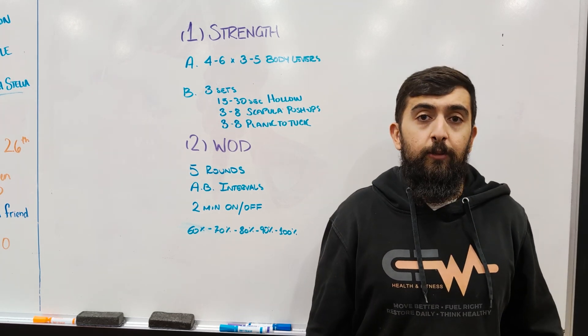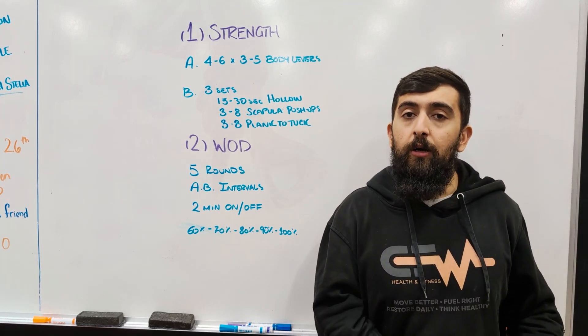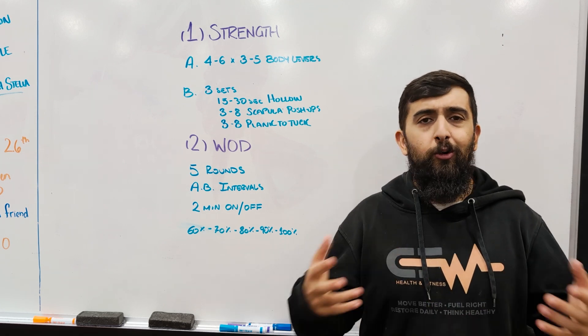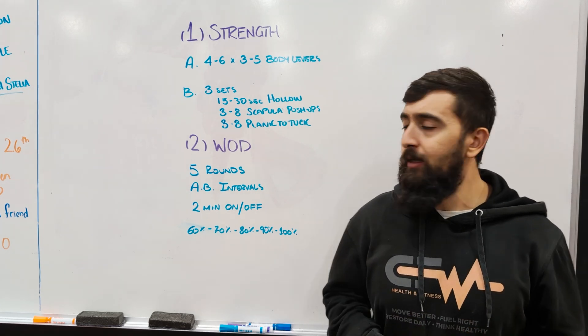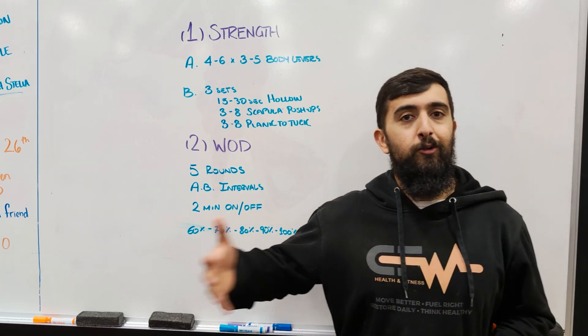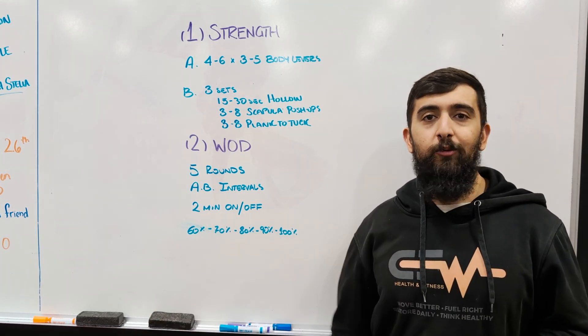The plank to tuck. Another way to work on building core strength for a toes-to-bar, knees-to-elbows, or just overall control of your midline. So lots of benefits from this, but this does also help you work towards that ultimate movement of the planche.